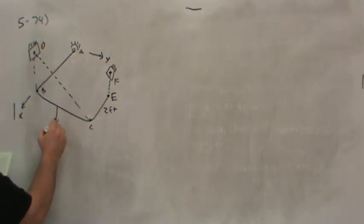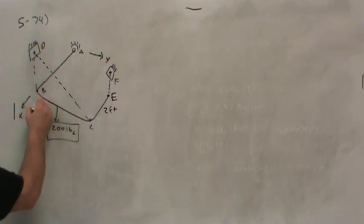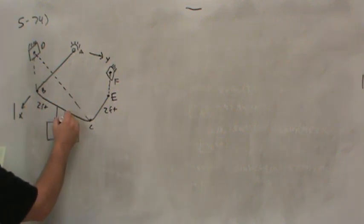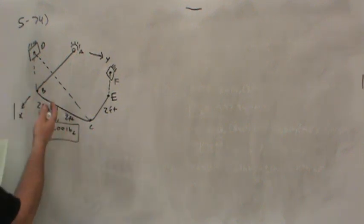There's a weight centrally located two foot, two foot between BC, so at the midpoint of BC. BC is four feet obviously.